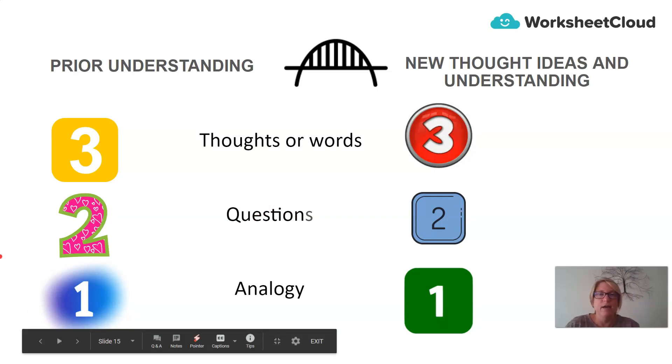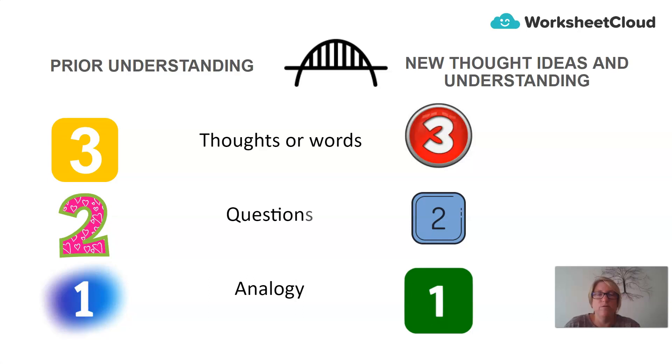What I would like you to do now is look at what you wrote down for your prior understanding before the start of the lesson. Go back and have a look at any thoughts, the three thoughts or words that you wrote down, any two questions you had, and an analogy that you were able to think about. And now, after going through this lesson, what are three new thoughts or ideas that you had, and are there any more questions that you may have? I want you to think of two further questions that have piqued your curiosity through the course of this lesson. And then, can you think of another analogy that links today's lesson?